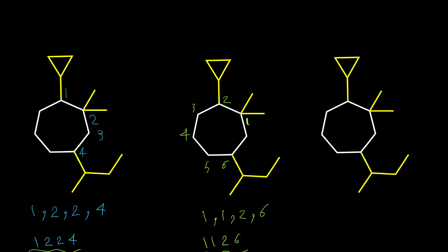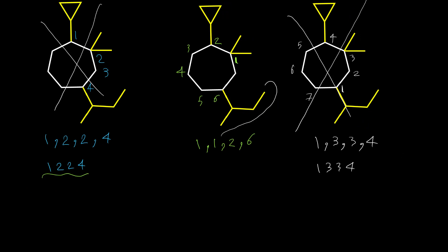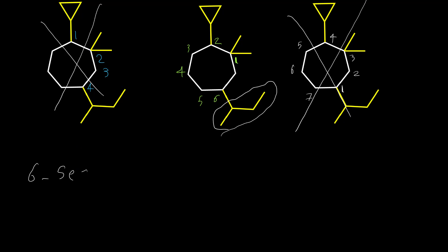For the third option, putting number one on the remaining carbon and going toward the closer side: three, four, five, six, seven — branches on carbons one, three, three, and four: giving 1,3,3,4. Among all three options, the middle one (1,1,2,6) is the best. So we ignore the other two and write the name based on that numbering. The name of the large group is sec-butyl, located on carbon six, giving 6-(sec-butyl). On carbons one and one we have dimethyl: 1,1-dimethyl.